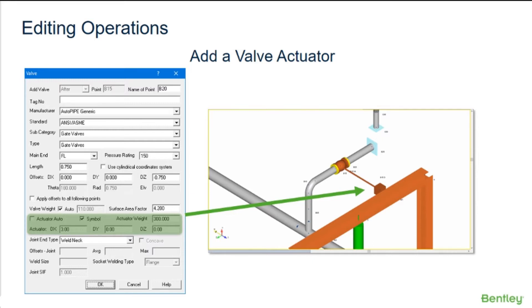Enter the weight of the actuator in the actuator weight input. This weight is the dry weight of the actuator or handwheel as a point load applied at the actuator offsets point D from the valve midpoint.